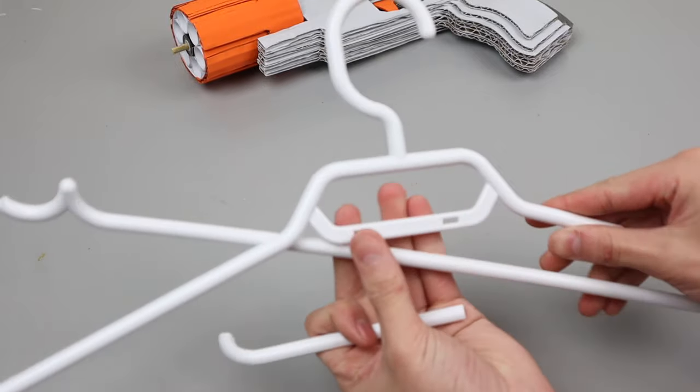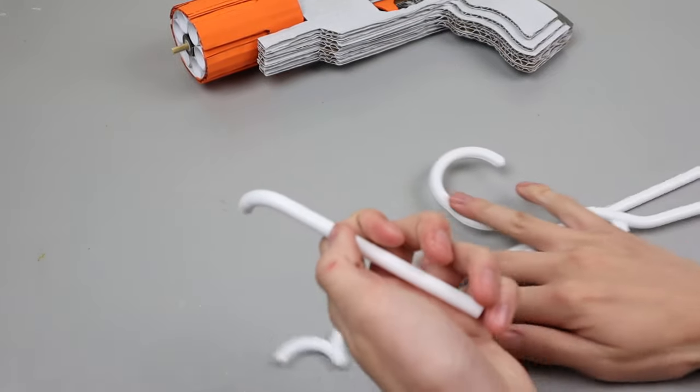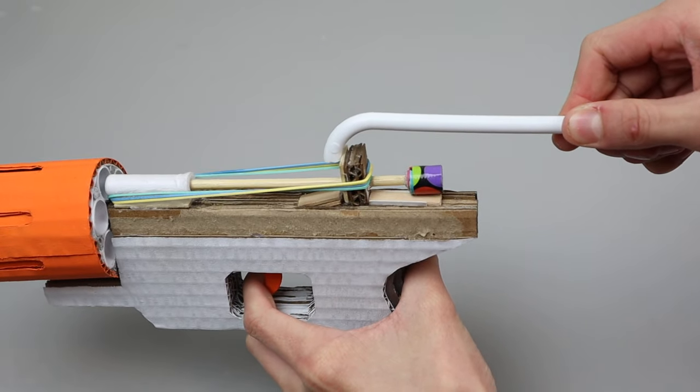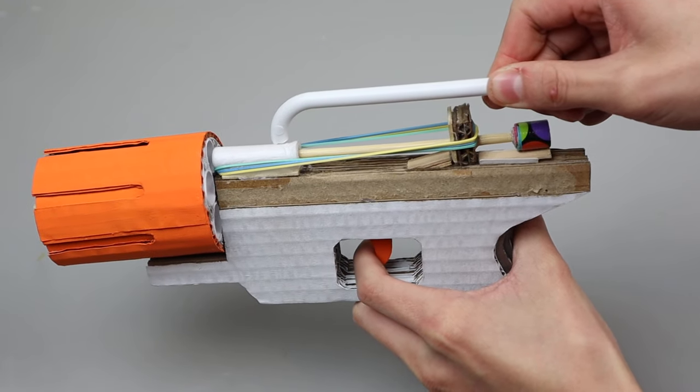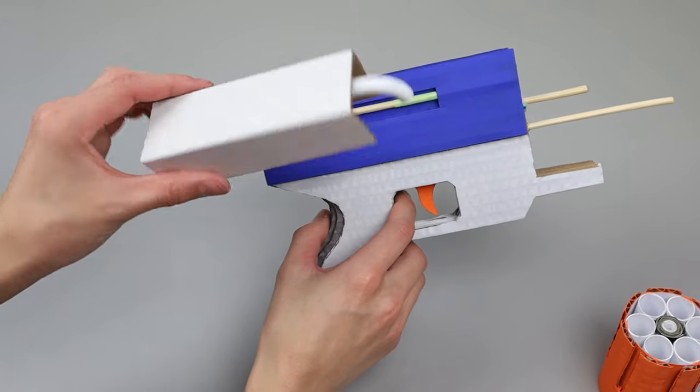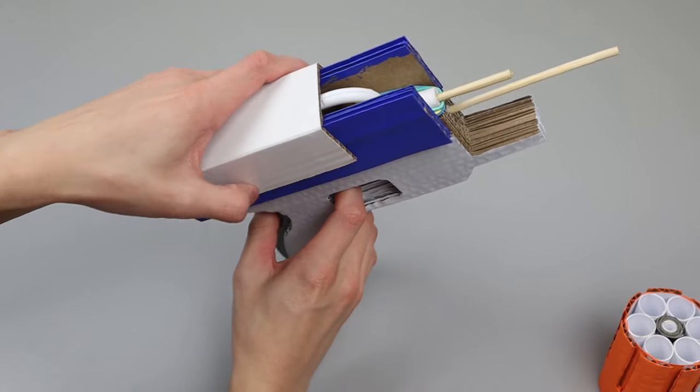At this point I needed some way to be able to cock the gun, so my solution was to use this old clothes hanger. I cut off a piece of that to sort of act as a hook. When you pull back the charging handle, the clothes hanger will drag the firing pin back with it, which will get caught on that lip.